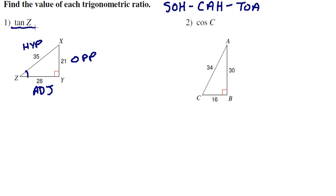Now the instructions on this one tell us we're looking for the tangent of Z. So our tangent is our opposite over adjacent. So the tangent of angle Z is 21 over 28.